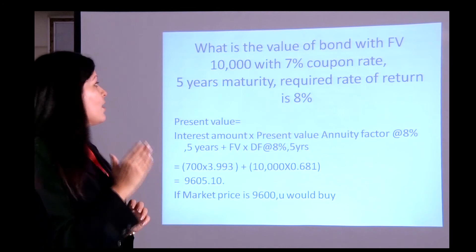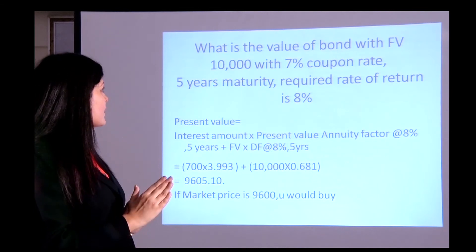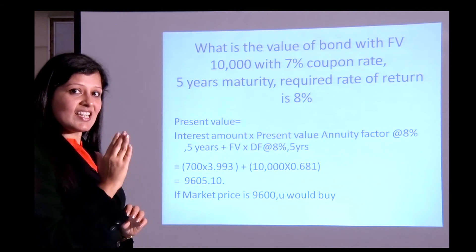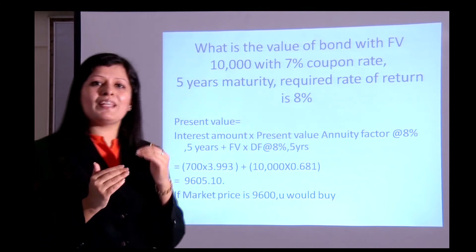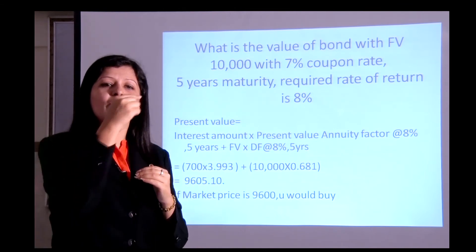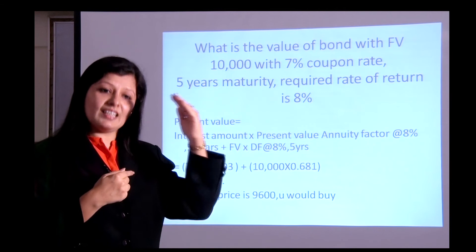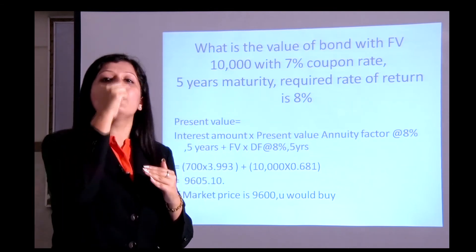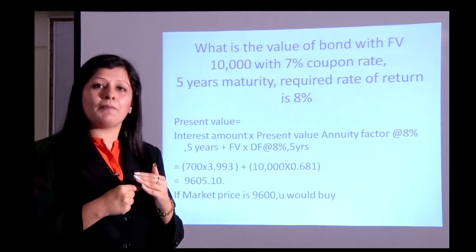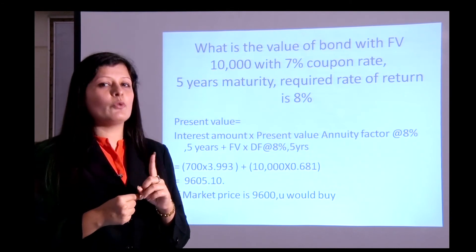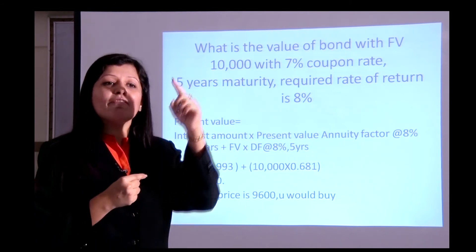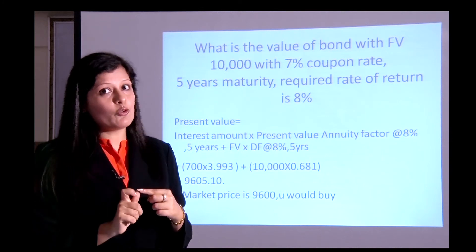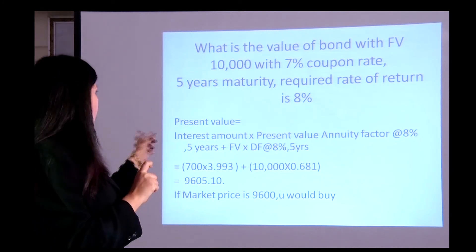What is the value of a bond with a face value of 10,000, coupon rate of 7%, five-year maturity, and required rate of return of 8%? In the previous example we showed the cash flows individually. But since the interest cash flows are constant (an annuity), we can use an annuity factor instead of calculating each year separately.